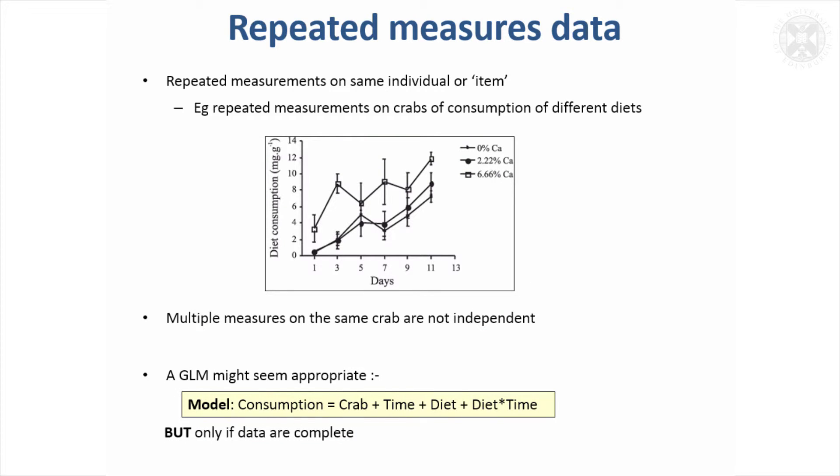You might think, well that's simple, I'll just fit the crab identity in my model and that will be fine. Sometimes it is possible to use that model, but only if the data are complete. You need to be very careful not to treat this data as independent because it's coming from the same crabs - you need to take that into account.